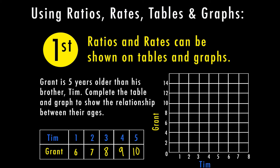We can also graph these numbers, and the graph is already labeled for us. Tim is on the x-axis and Grant is on the y-axis. When Tim is one year old and Grant is six, we put a dot there to represent their ages at the same time. When Tim is two, Grant is seven. When Tim is three, Grant is eight. When Tim is four, Grant is nine. And when Tim is five, Grant is ten. Because their ages increase at the same rate, this makes a straight line, and it would continue because they're always going to be five years apart.